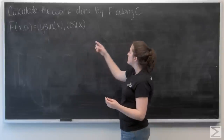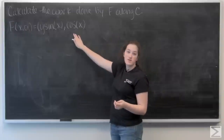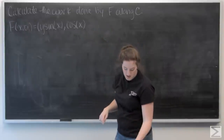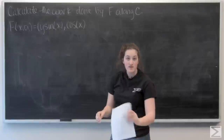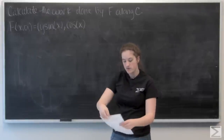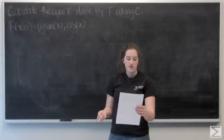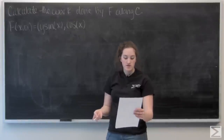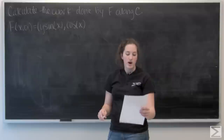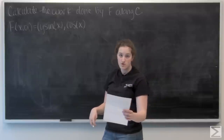For this problem, I'm asked to calculate the work done by this vector field f along a curve c. I'm given a description of c: c is the oriented curve which starts at (0,0) and moves along the parabola where y equals x squared to the point (2,4).